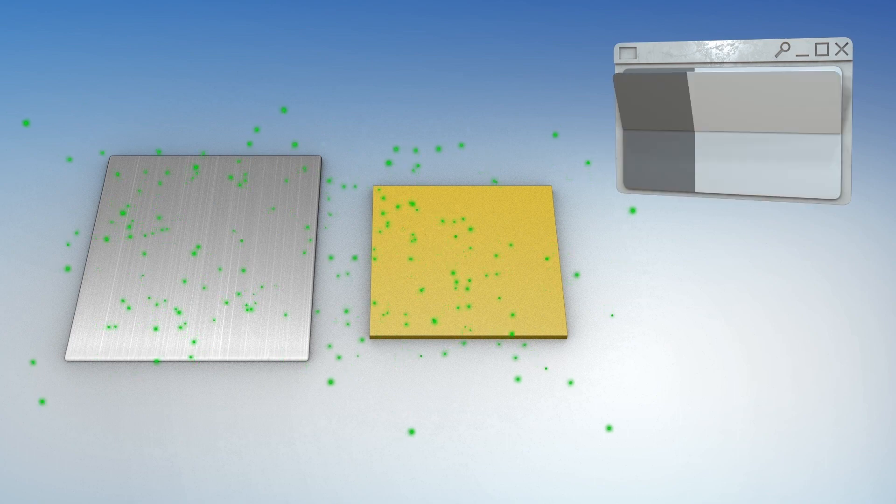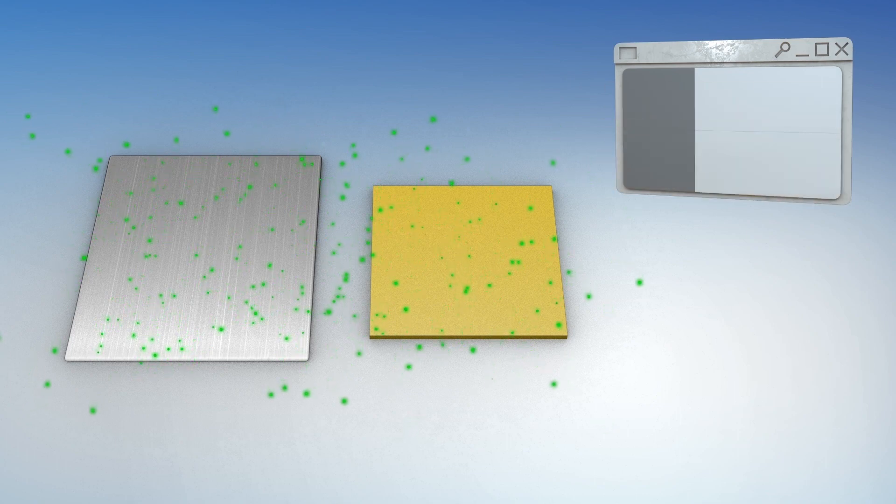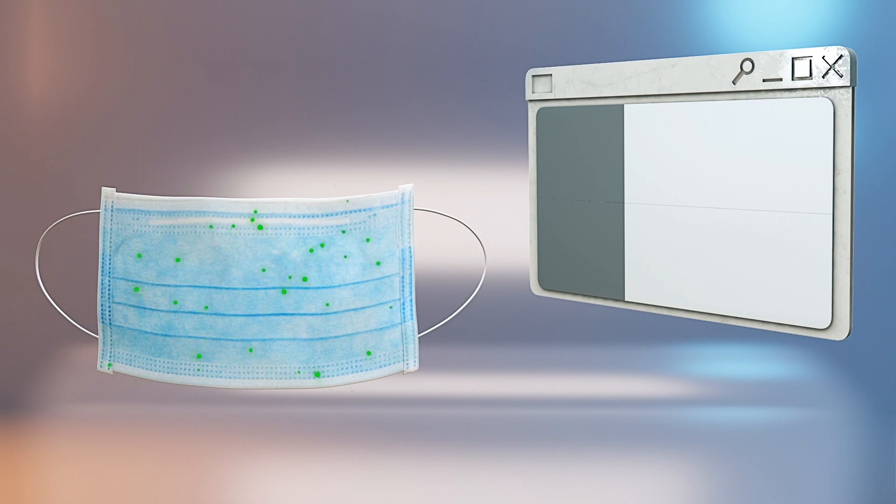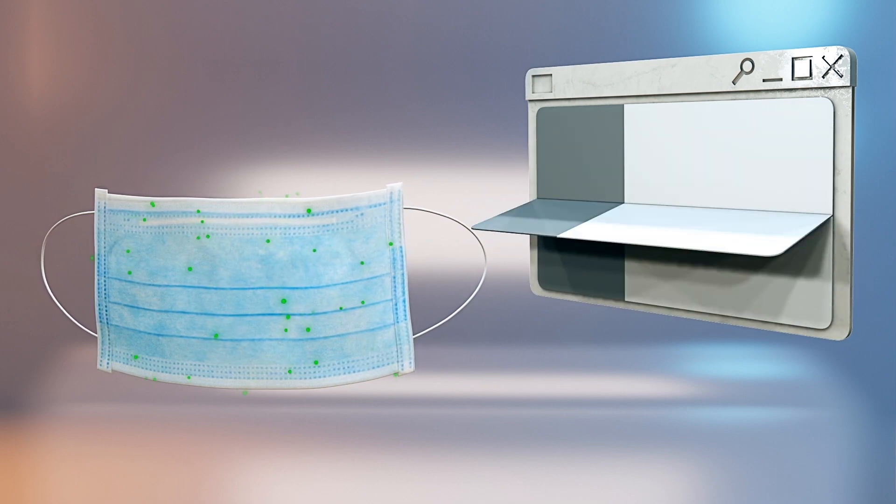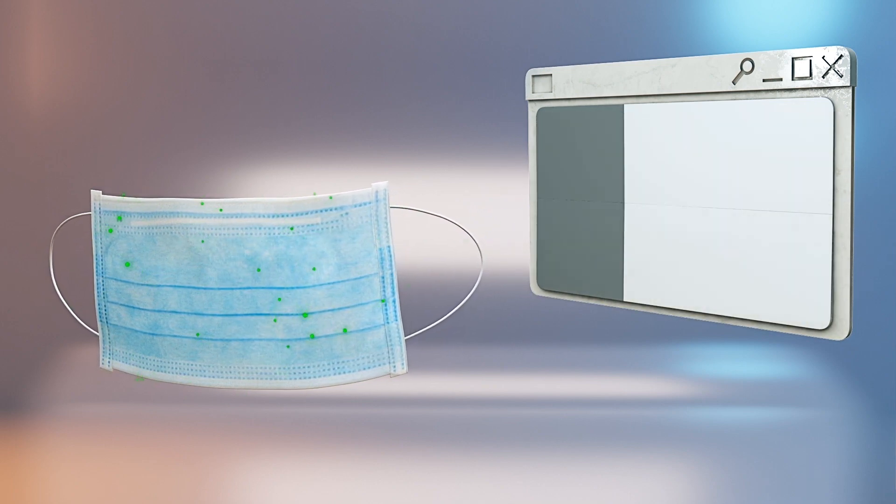Stainless steel and plastic surfaces had no detectable virus on their surfaces by day seven. However, the infectious virus could still be detected on the outer layer of a surgical mask by day seven.